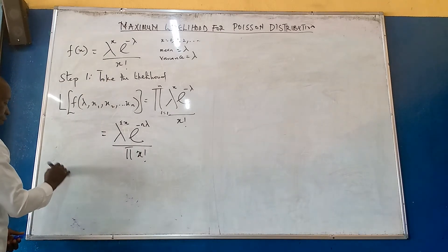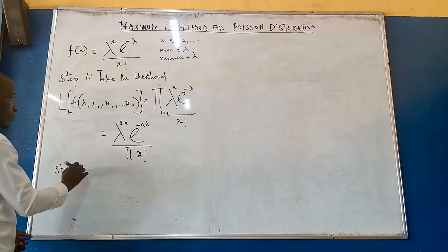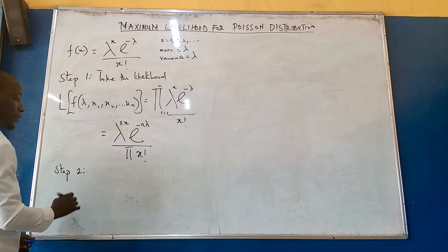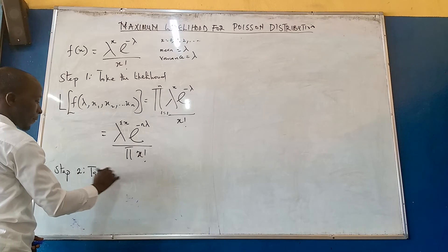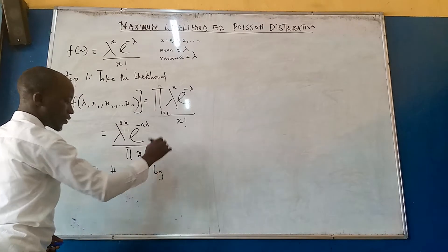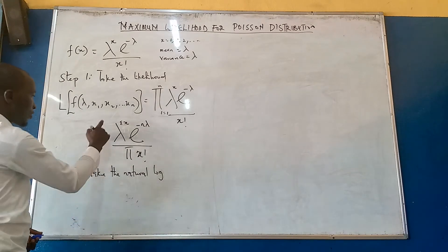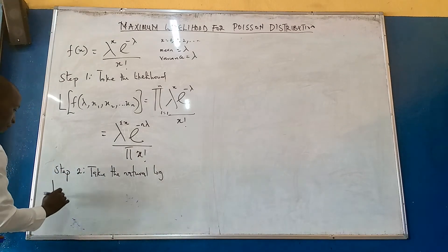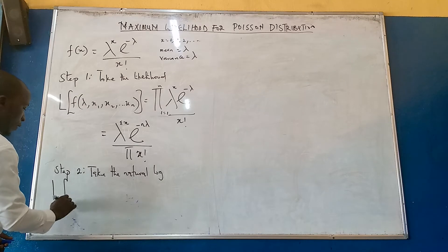Now, step two. Take the natural log. And the natural log of the likelihood,